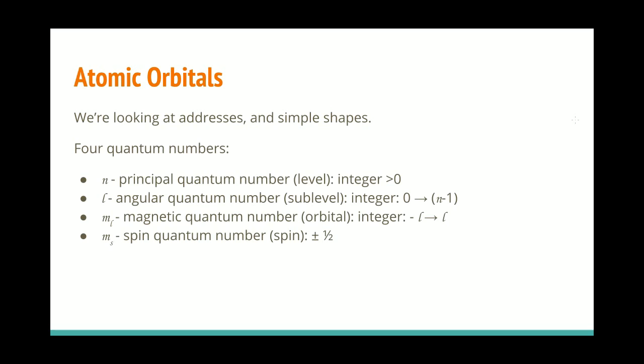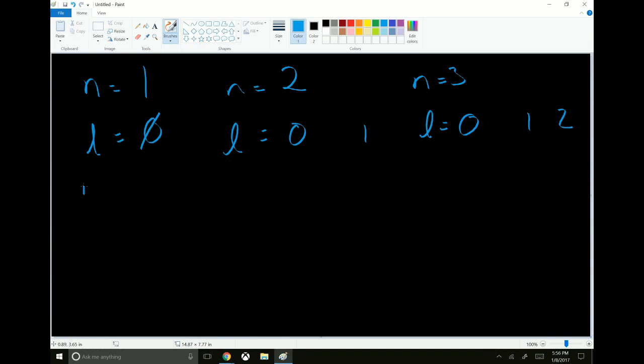So, n equals one, l equals zero, m sub l can only be zero. L is equal to zero, so m sub l is only zero. But if l is equal to one, then m sub l can be negative one, zero, or one. Zero, negative one, zero, one.